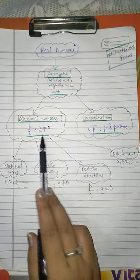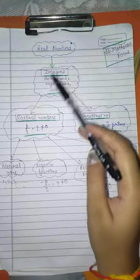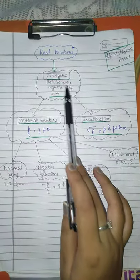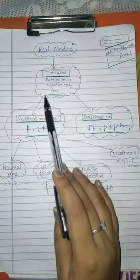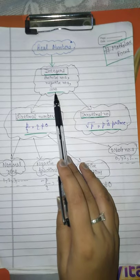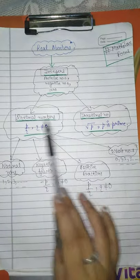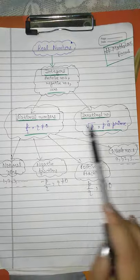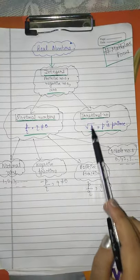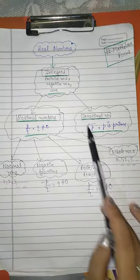Remember that real numbers include integers, positive numbers, negative numbers, and zero. Within these are rational and irrational numbers. Fractions are rational, and where there is a prime number under root, that's an irrational number. Apart from that, all are rational numbers.